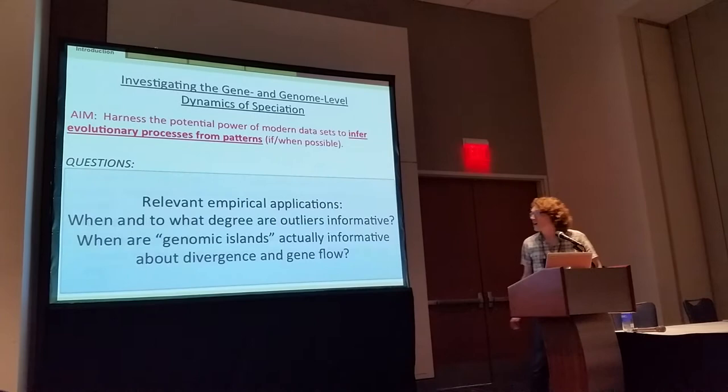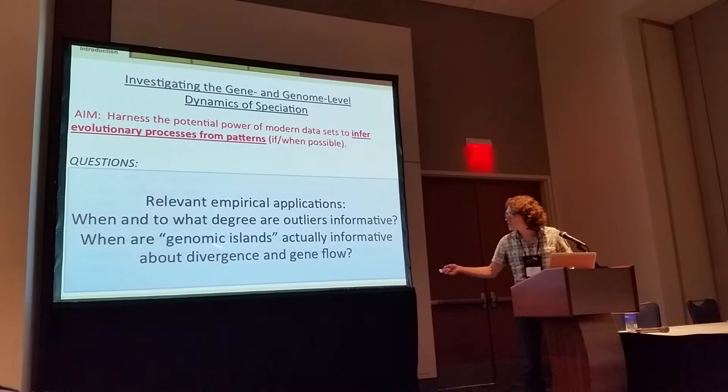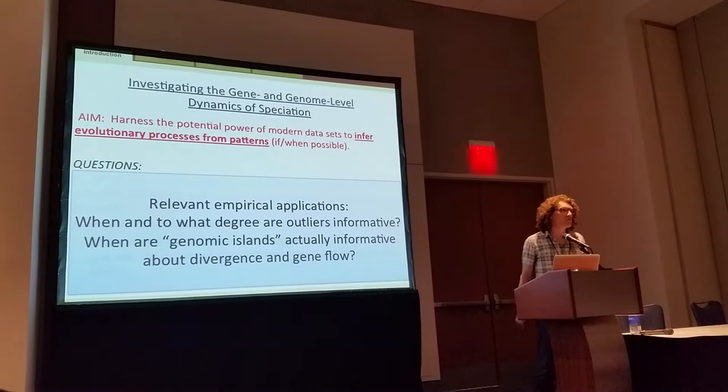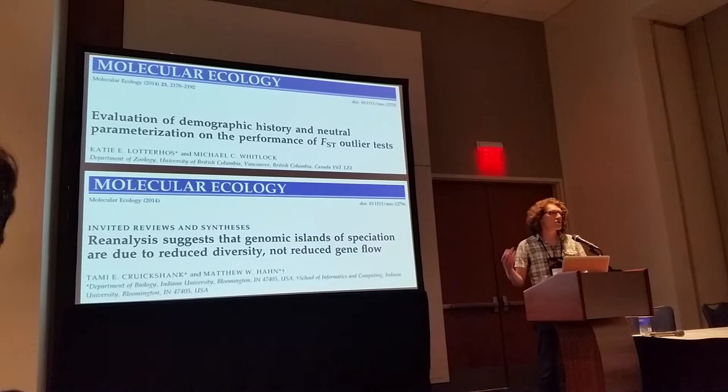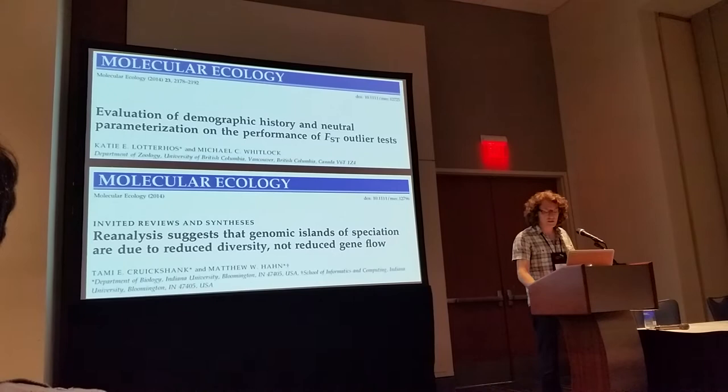Now, these are questions that I approach as a theoretician, but I think they have a lot of relevance to analyzing empirical data sets, because we all want to know when and to what degree our outliers are indeed informative — when things that some people call genomic islands are actually informative and likely to contain the loci involved in divergence and reproductive isolation. Very recent publications make it clear that the jury is still out on these questions.